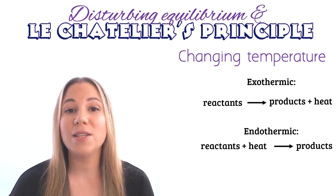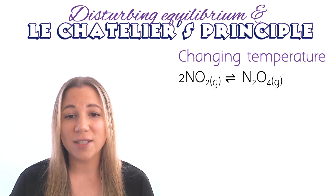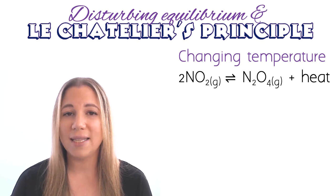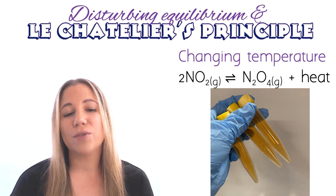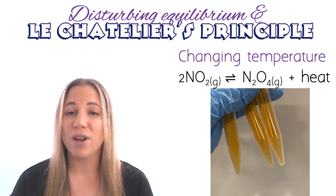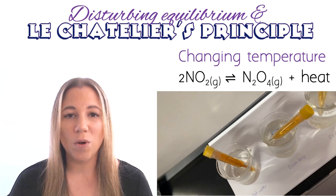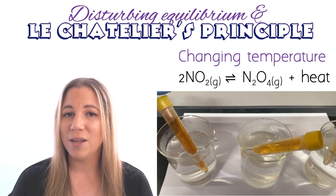Here we have the same reaction: nitrogen dioxide to dinitrogen tetroxide. The forward reaction is exothermic, meaning it releases heat energy, so we can write heat on the right-hand side as a product. I have three vials, all with the same amount of nitrogen dioxide gas, all having reached equilibrium — shown by the stable, consistent colour across all three. I'm going to put one in a hot water bath, one in a cold water bath, and keep one at room temperature for comparison.